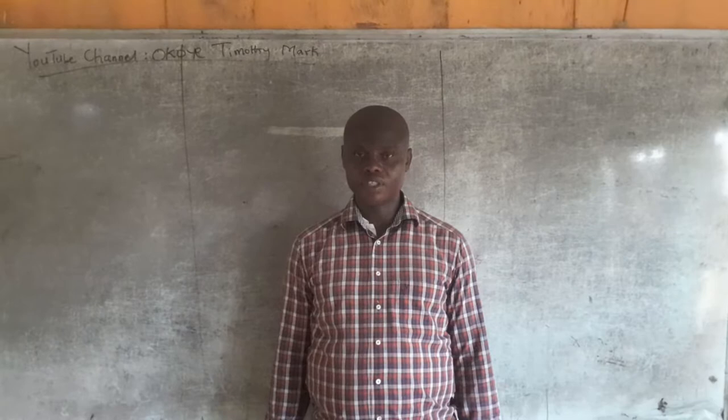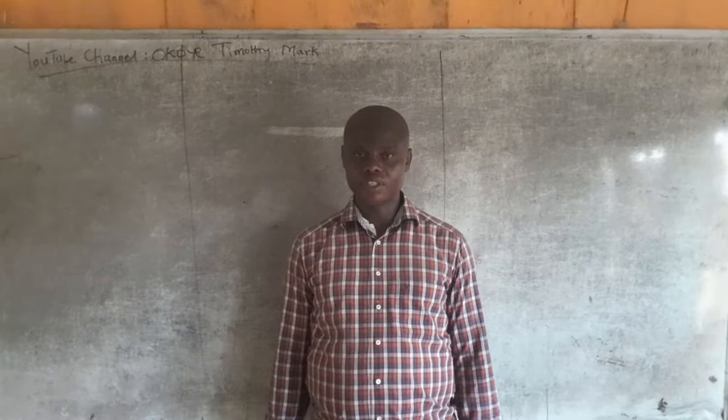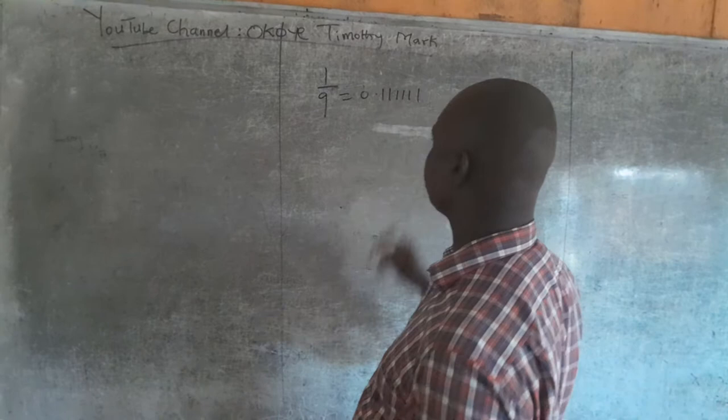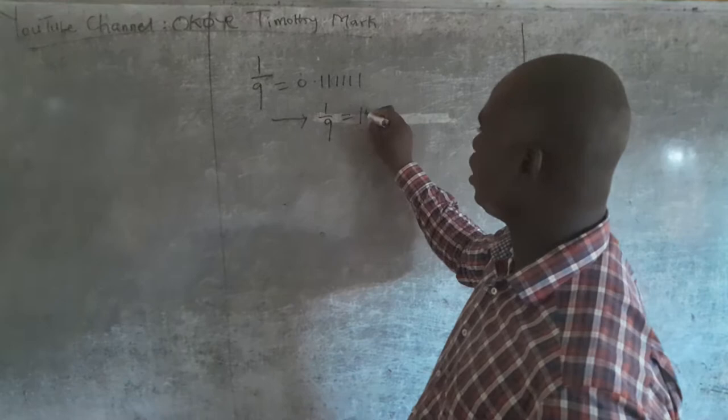Example one: 1/9 equals 0.111111 repeating, which implies that 1 over 9 is invariably 11.1111 percent when you multiply by 100.